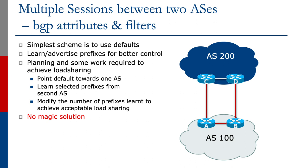Otherwise, the simplest scheme is to use defaults and learn or advertise prefixes for better control. Planning and some work is required to achieve good load sharing: point default towards one ISP, learn selected prefixes from the second one, and modify the number of prefixes learned to achieve acceptable load sharing. There's no magic BGP multi-home configuration available on any router — it takes you, the network operator, to understand how to use the BGP attributes and how to manage aggregates and sub-prefixes to achieve the load sharing you wish for your network.